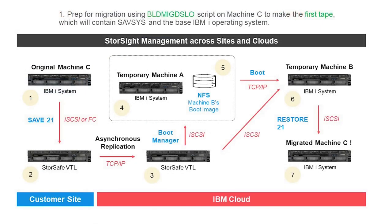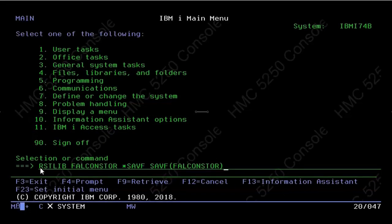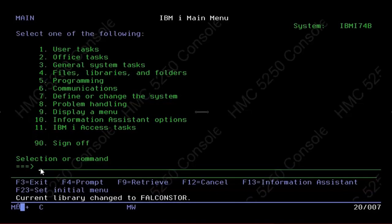The first step in migrating Machine C to the MSP or IBM cloud is to prepare it at the customer site by running a custom script. The IBM i server is labeled Machine C. Here we are looking at the green screen console of Machine C, and we begin the migration process with an RSTLIB or Restore Library command. Once that has run to completion, we can change our current library to FalconStore, which was successful.